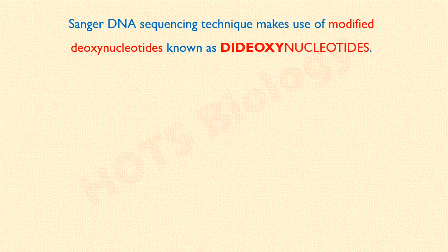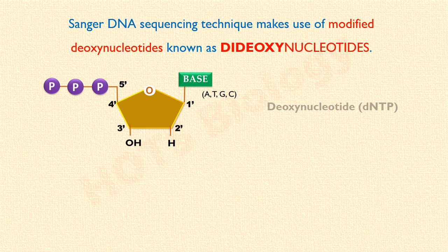Sanger DNA sequencing technique makes use of modified deoxynucleotides known as dideoxynucleotides. What are these dideoxynucleotides? Look at this image. This is a basic chemical structure of a deoxynucleotide. You can see that at the 3' position of the sugar, a hydroxyl group is present. This is the 3' hydroxyl group which participates in phosphodiester bond formation during DNA synthesis.